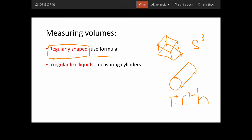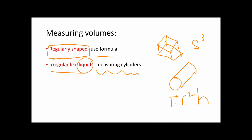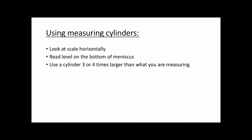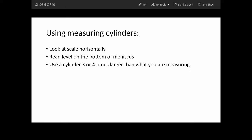If it's irregularly shaped, like liquids, you use measuring cylinders. There are a few points you need to know about when using measuring cylinders. First, you have to look at the scale horizontally. You have to read the level on the bottom of the meniscus, and you use a cylinder that's three or four times larger than what you were measuring.